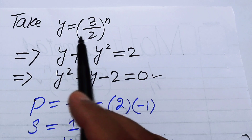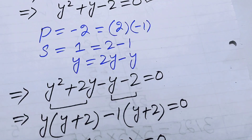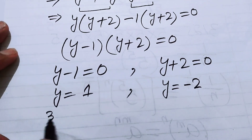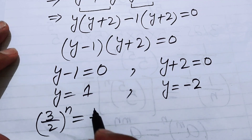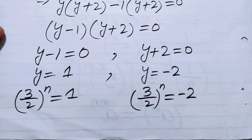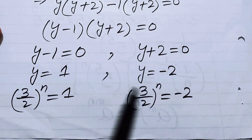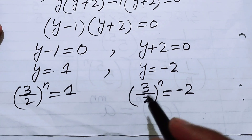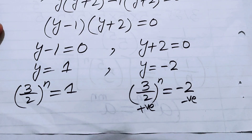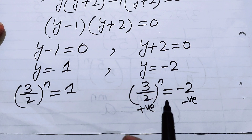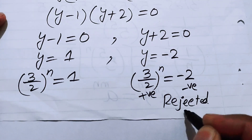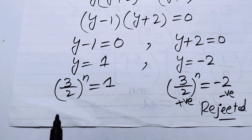Back substituting y equals 3 over 2 to the power of n: the first case gives 3 over 2 to the power of n equals 1, and the second gives 3 over 2 to the power of n equals minus 2. We discuss the second case first — since an exponential function always gives positive values, it cannot equal a negative number, so this case is rejected.